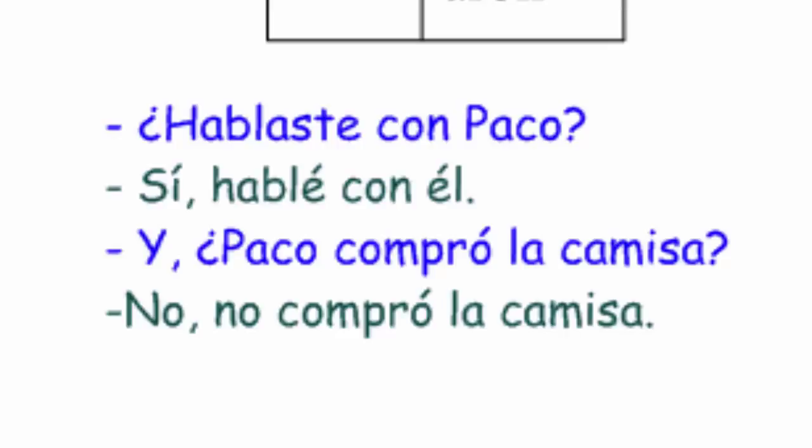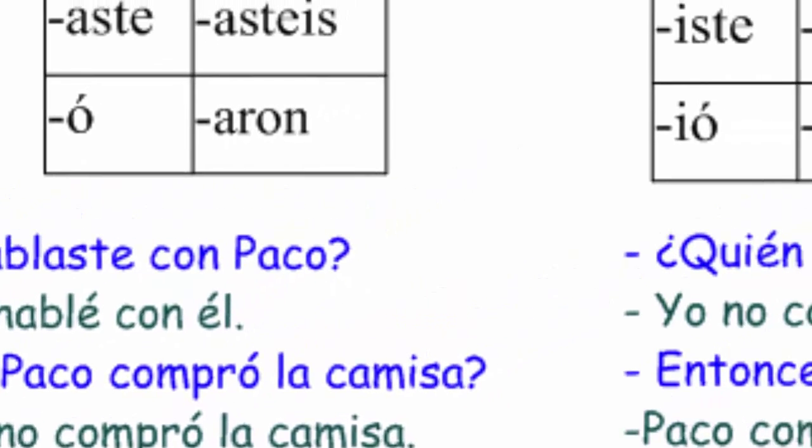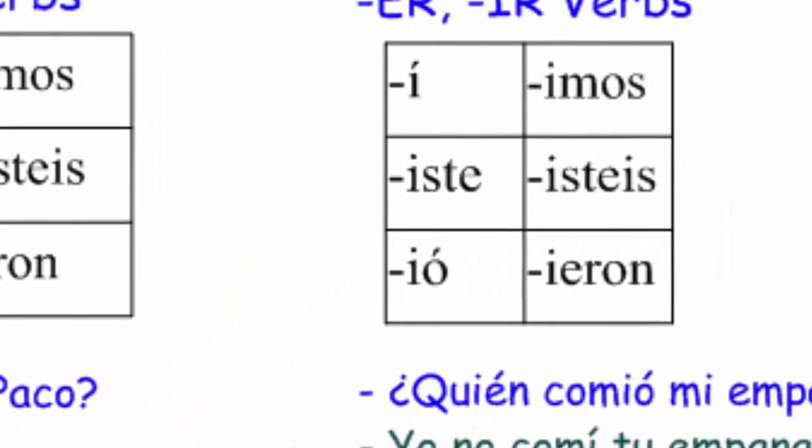There's a quick sample of the AR verbs. Now let's check ER and IR verbs. ER and IR verbs have the same endings — they share the same endings.